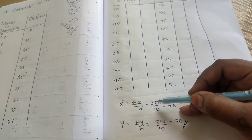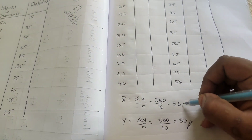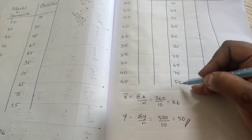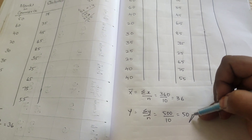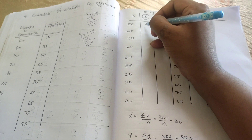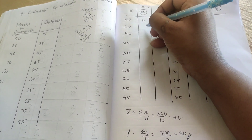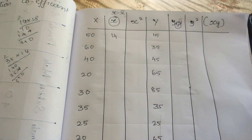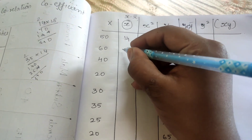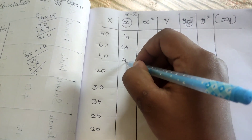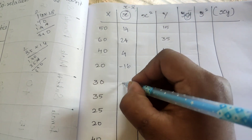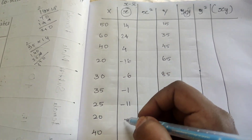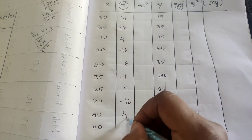Similarly for y values, when we add everything up, we get 500. Dividing by n equals 10, we get ȳ equals 50. Now we calculate deviations: 50 minus 36 gives 14; 60 minus 36 gives 24; 40 minus 36 gives 4; 20 minus 36 gives minus 16; 30 minus 36 gives minus 6; 35 minus 36 gives minus 1; 25 minus 36 gives minus 11; 20 minus 36 gives minus 16; 40 minus 36 gives 4.